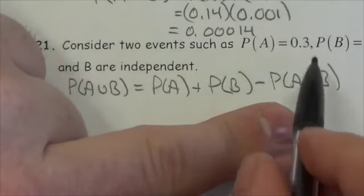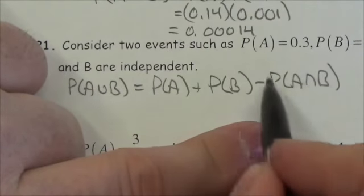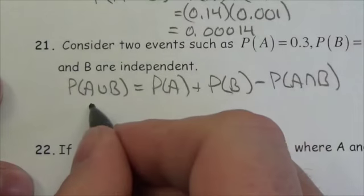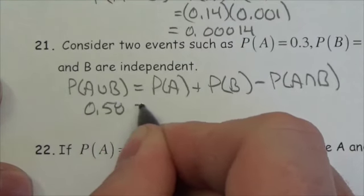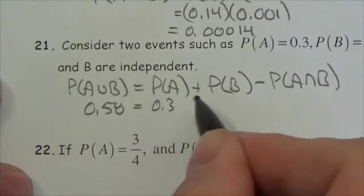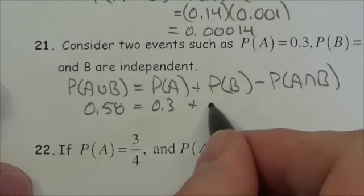Now what we're curious about is the value here. Now we know that A or B is 0.58, A is 0.3, and B is 0.4.